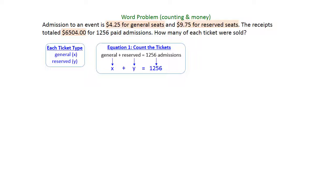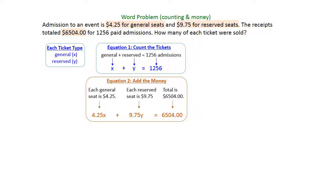The problem also tells us how much each seat was charged, and it also tells us the total receipts. So for our second equation, we're going to add the money. For each general seat, we're going to put 4.25x, since x is our general seat. Reserved seats is going to be plus the 9.75y, and when we add all of that together, our total should be $6,504. So that gave us our system of equations for this word problem. The x plus y counting the tickets is 1,256, and when we put all of our money in, we've got each ticket price and then we've got the total.